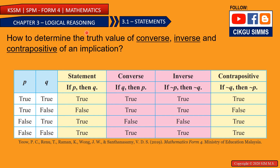Chapter 3, Logical Reasoning 3.1 Statements. In this lesson, you're going to learn how to determine the truth value of converse, inverse, and also the contrapositive of an implication. This is from the textbook. If you try to remember this without understanding it, this table will be a bit confusing, so I will teach you how to understand it.